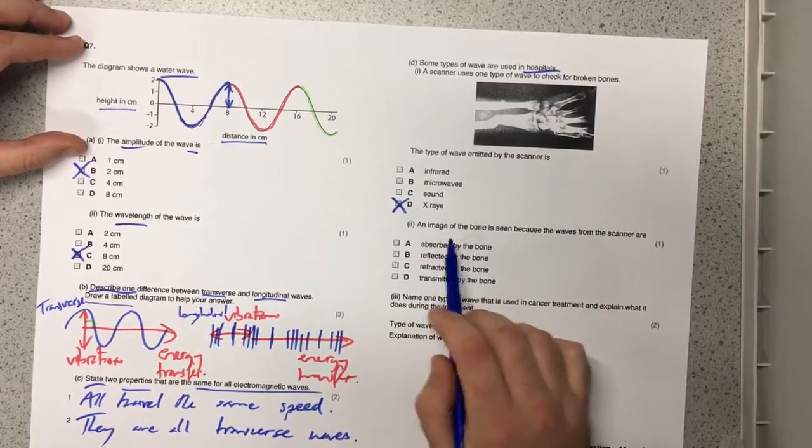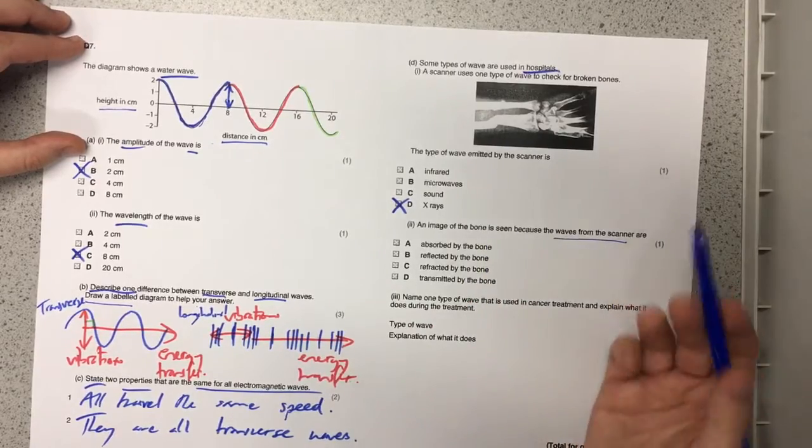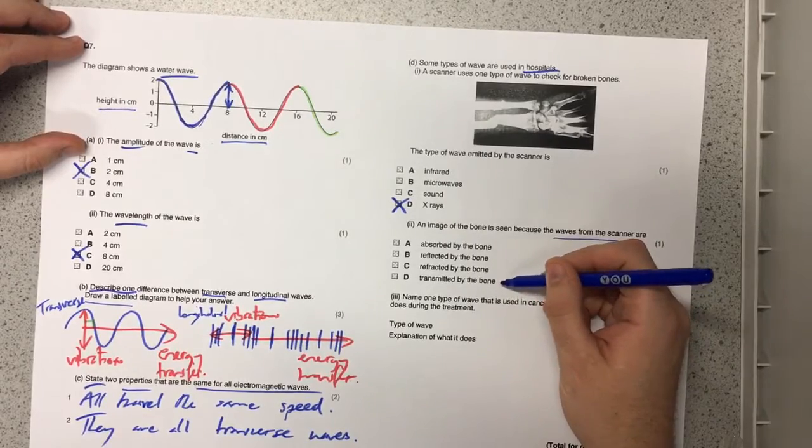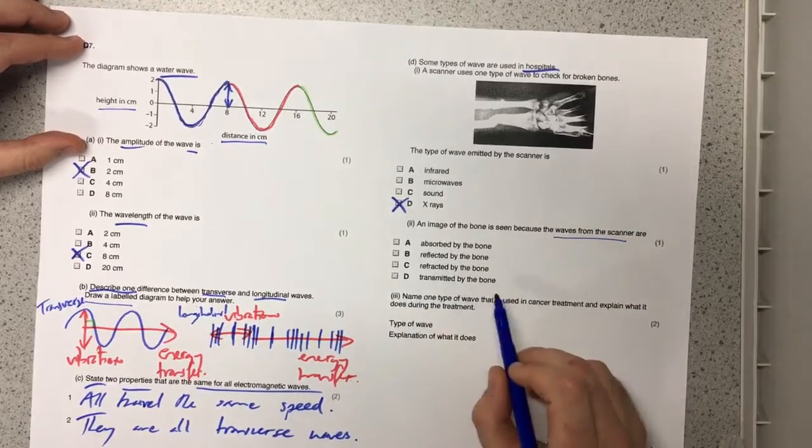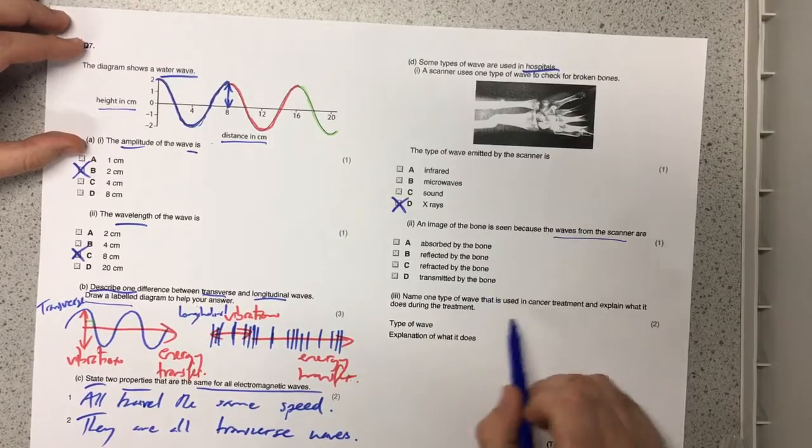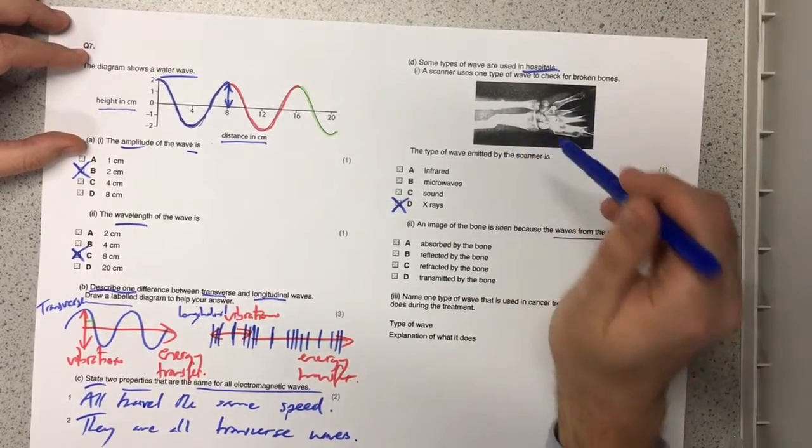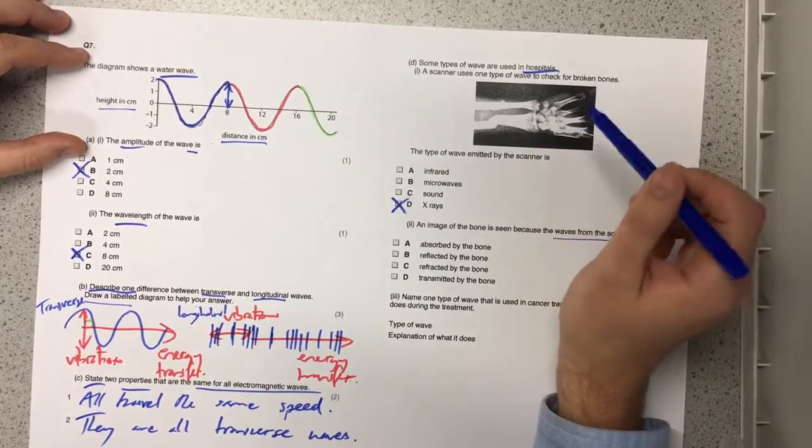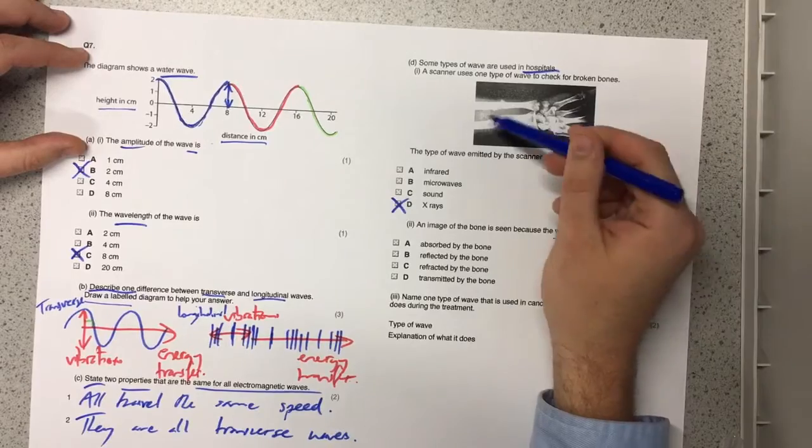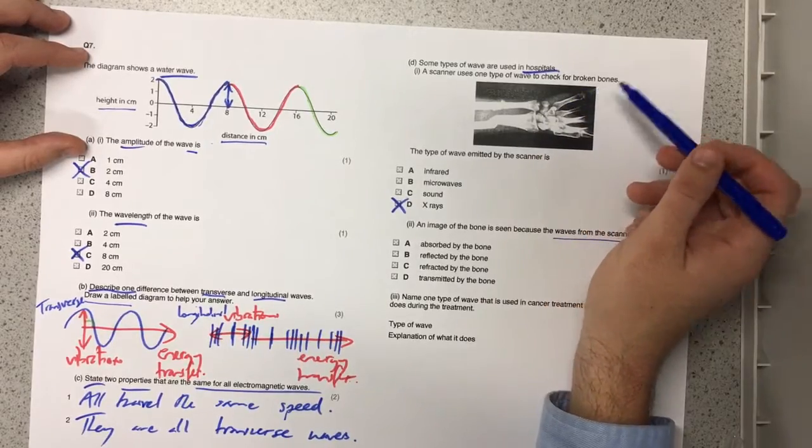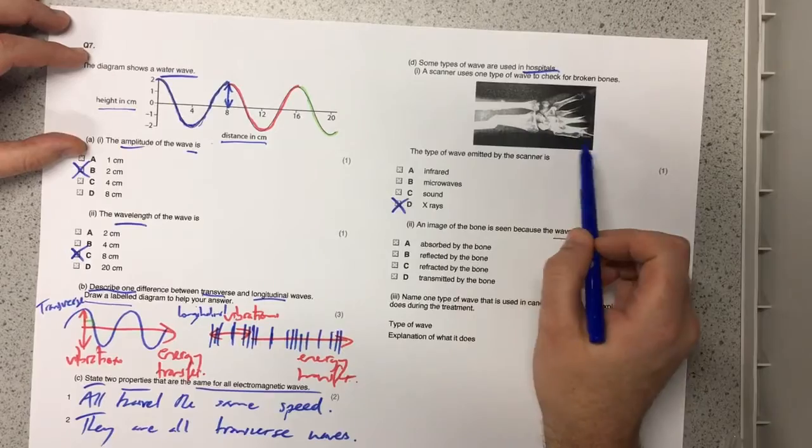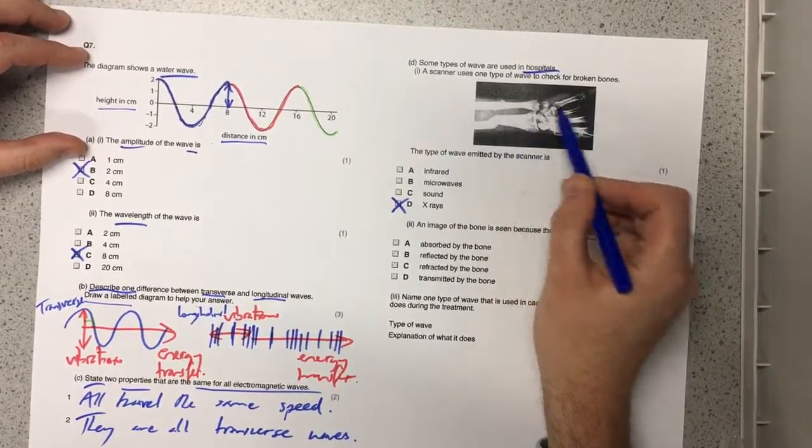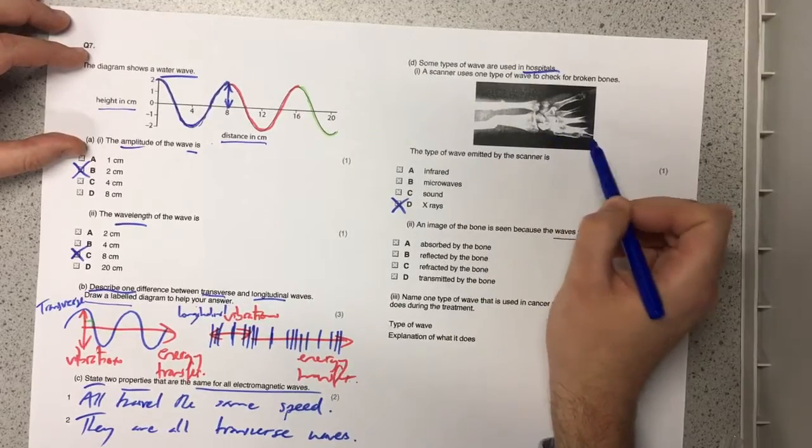It says here that the image of the bone is seen because the waves in the scanner are. Now we've got to think is it absorbed by the bone, reflected by the bone, refracted by the bone or transmitted by the bone. It can't be transmitted by the bone because it's transmitted by the flesh which is why the x-rays move through the body, through the flesh and the muscles and hit the screen and turn the x-ray photograph black. And so some of the light is not getting to the x-ray image and therefore it's not developing and you're getting this clear pattern here where the bones are.